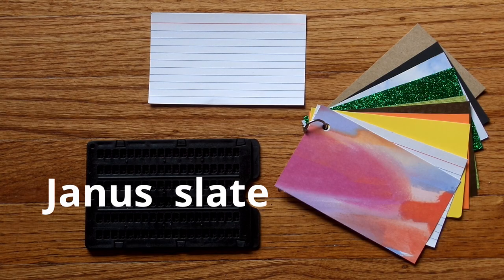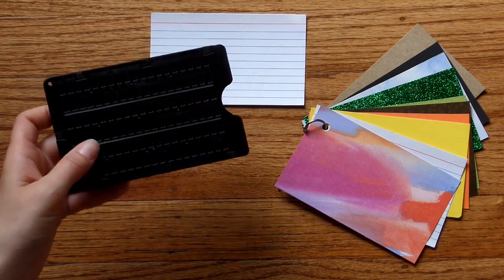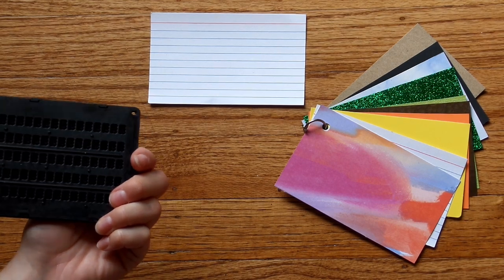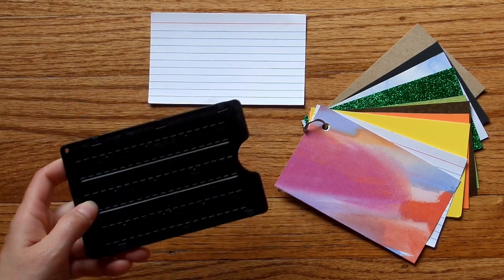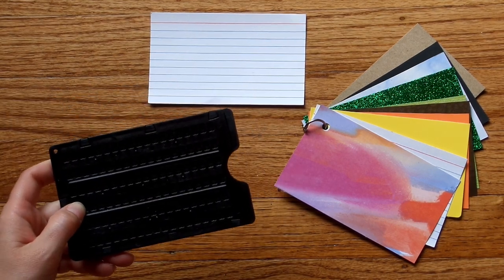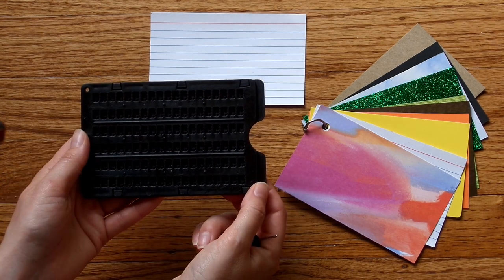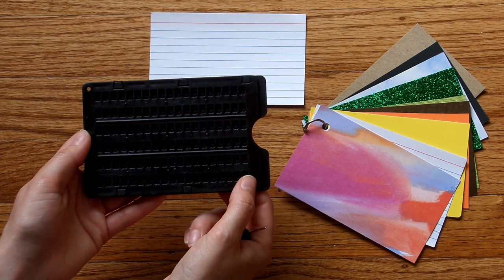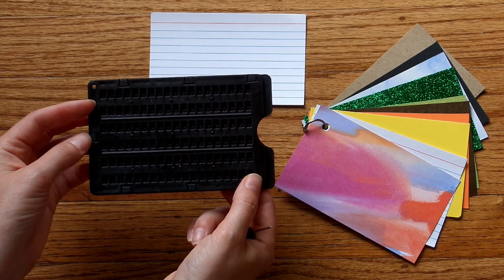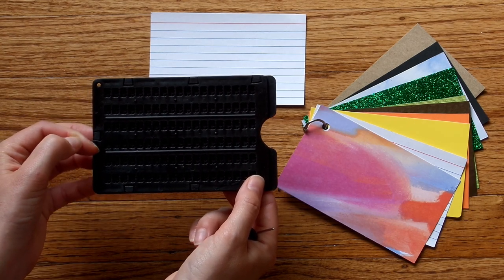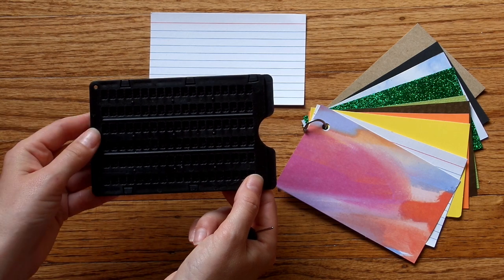The next slate I want to show you is the Janus slate, and what's so special about it, it is an interpoint. Well, basically. So interpoint means that there's braille on both sides of the page, and they're slightly offset. So technically, this is not an interpoint. It's actually double spaced, and the way I can tell that is that there's a lot of space in between each line of text, whereas if this was an interpoint, it would be a lot closer together.